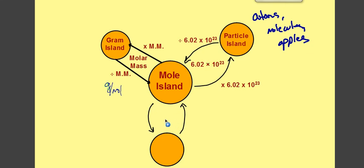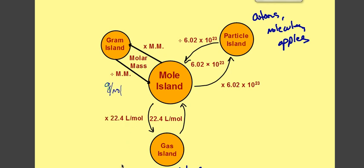Finally, we have Gas Island, and this is for the molar volume. The conversion we use is the molar volume — 22.4 liters for every mole of gas at STP. If we're at Mole Island and want to convert to Gas Island, we multiply by our molar volume. And if we have so many liters and know it's 22.4 liters per mole, we divide by our molar volume. This is the Mole Island Archipelago.